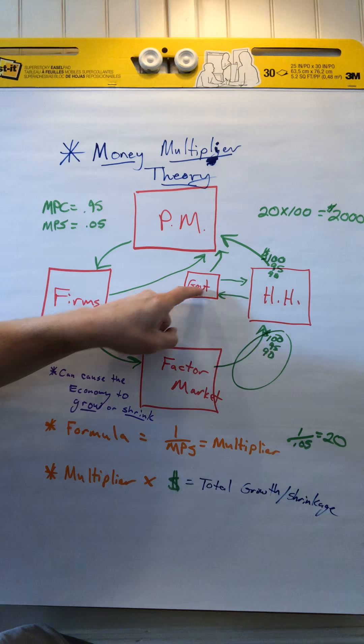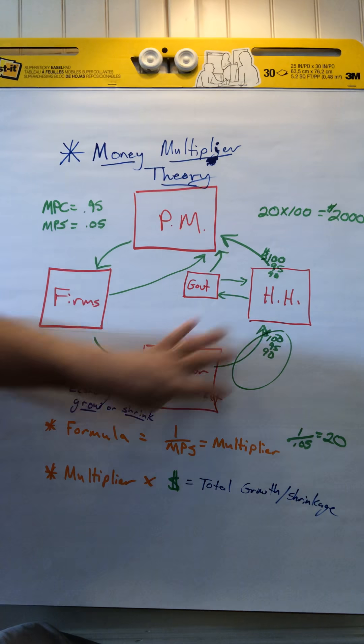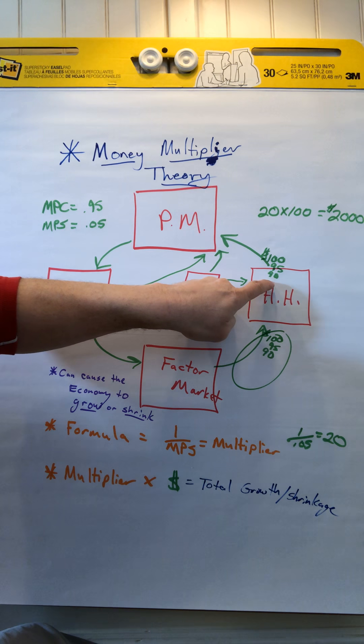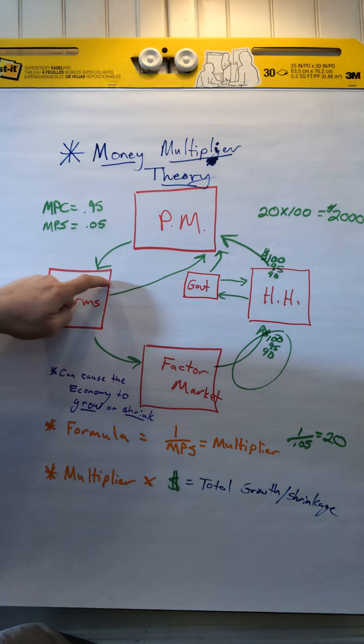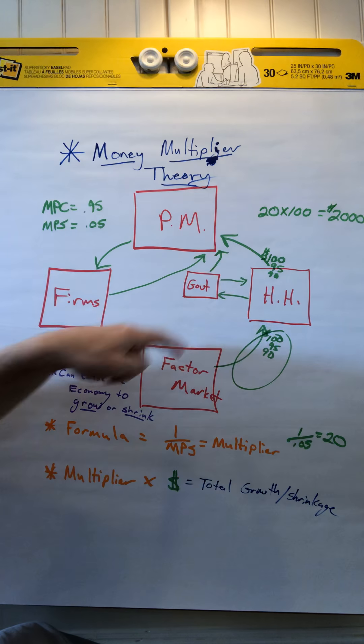So households, government, and firms can all spend money to help create money. If they cut back on spending, they cut back on spending, they cut back on spending, then it slows our economy down.